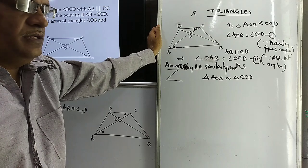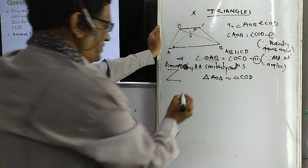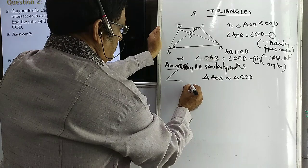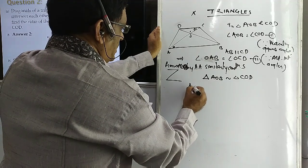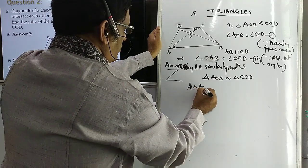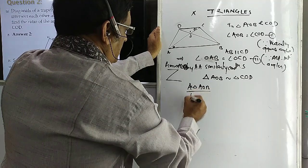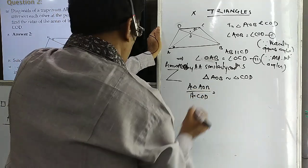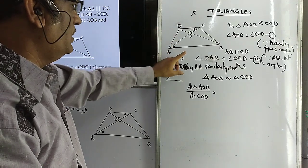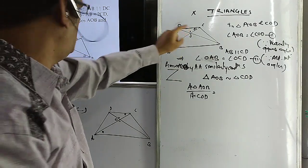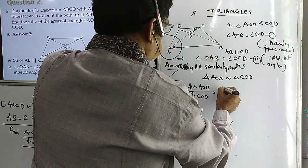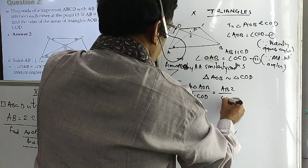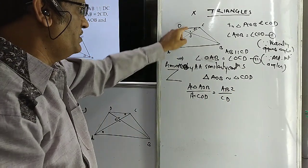And if these two triangles are similar, you know that ratio of area of two similar triangles equals ratio of square of their corresponding sides. So area of triangle AOB by area of triangle COD equals AB squared by CD squared. AB corresponds to CD.